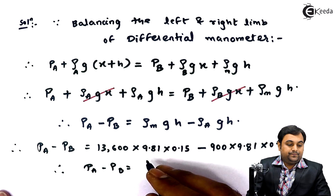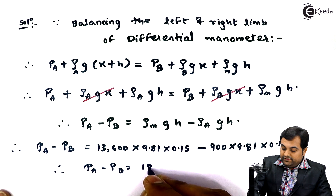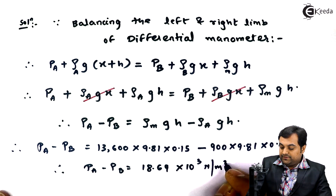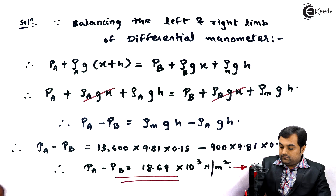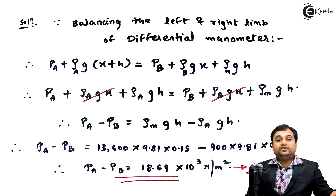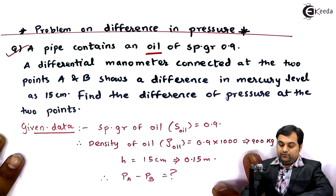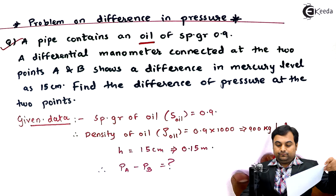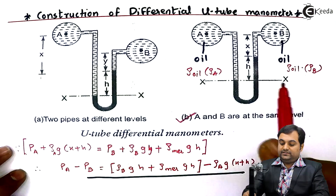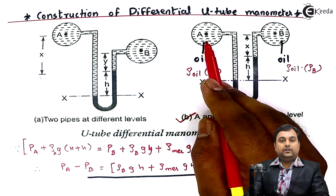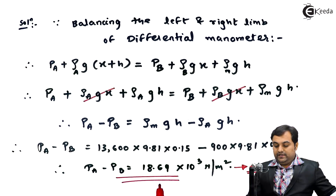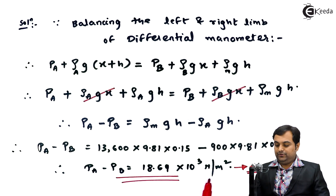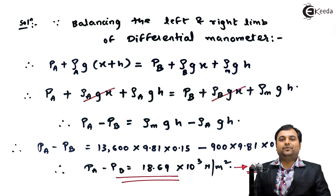Substituting the values: PA minus PB equals 13600 times 9.81 times 0.15 minus 900 times 9.81 times 0.15. Calculating this gives PA minus PB equal to 18.69 into 10 raised to 3 Newton per meter square. The difference of pressure at points A and B is therefore 18.69 × 10³ N/m², completing the problem.